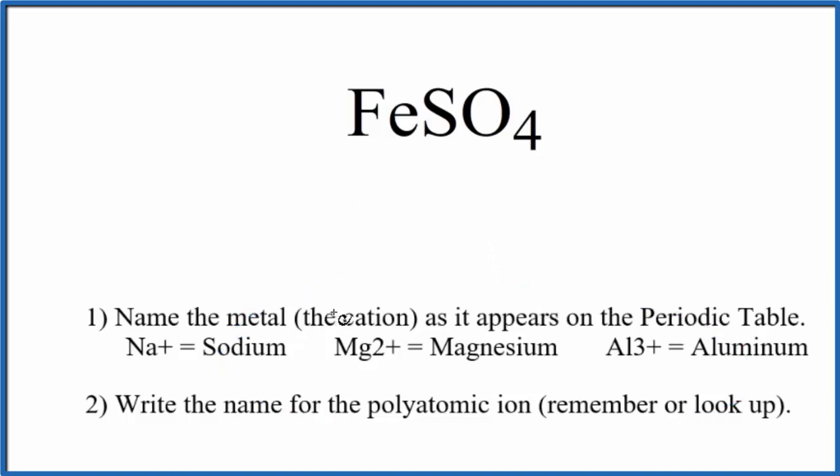So first we write the name of the metal. That's Fe, which is just iron. Then we write the name for the polyatomic ion. That's the sulfate ion here. One you should remember. Lowercase s and the name so far is iron sulfate.